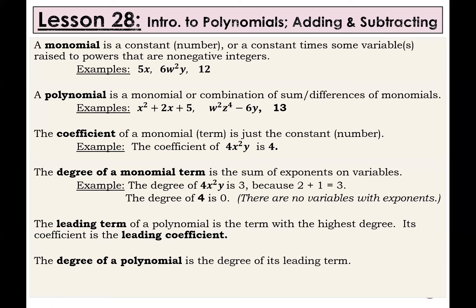Our first definition is monomial. A monomial is a constant or number, or a constant times some variables raised to powers that are non-negative integers. Think of mono as one — it's one single term. It can be just a number like 12, it can be a number with a variable like 5x, and there can be exponents as long as they are essentially positive whole numbers. For example, 6w squared y is a monomial — it's all one term. The 6 is called a constant. W squared and y are each variables, and they may or may not have exponents on them.